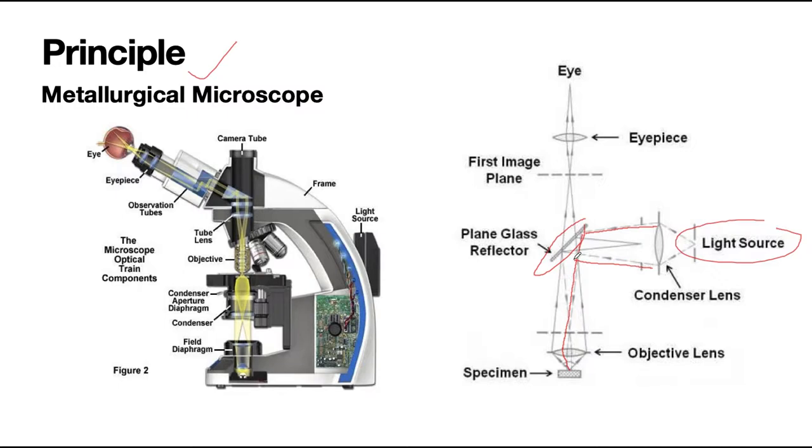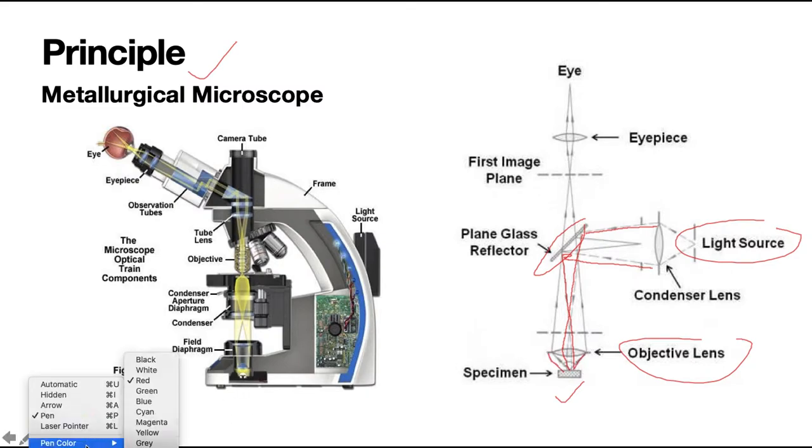This light will be reflected through the plain glass reflector downwards through the microscope objective on the surface of the specimen. Then some of these incident lights get reflected in this direction.